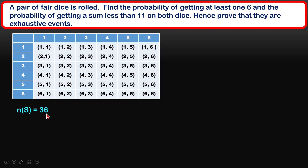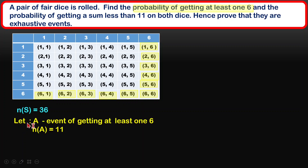The question asks us to find the probability of getting at least one six. I'll find all elements in the sample space that have at least one six. Let A be the event of getting at least one six. Counting them one by one, I get 11 elements. So the probability of A is 11 over 36.